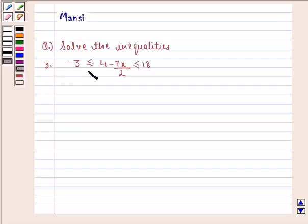Third question is minus 3 less than equal to 4 minus 7x by 2 less than equal to 18.